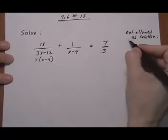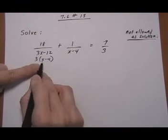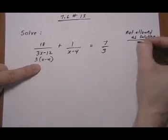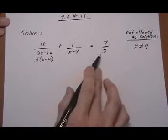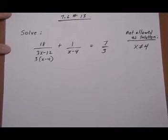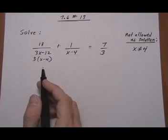Alright, so looking at what makes the denominator go to 0, if I put in a 4 here, 4 minus 4 is 0. So x cannot be 4. Same over here, x cannot be 4 and 3 doesn't matter. So if we get x is 4 as our answer, we're not going to allow it to be our answer.